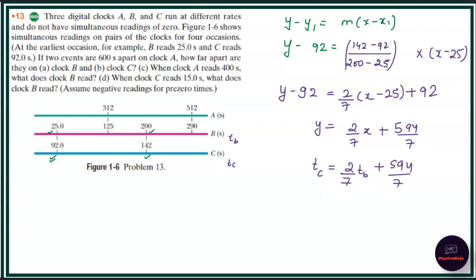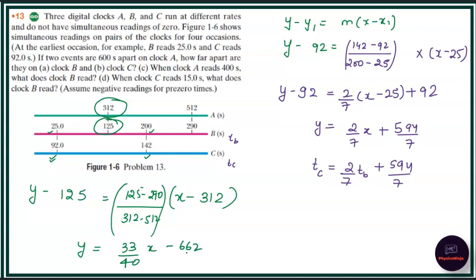Similarly, if we just relate the values A and B, what we will get is Y minus 125 for this, minus 312, that is if it is X, equals the relation between these two, like 512, 125 minus 290 divided by 312 minus 512. Same, we will get the result like Y equals 33/40 in the form of X, 62 divided by 5.